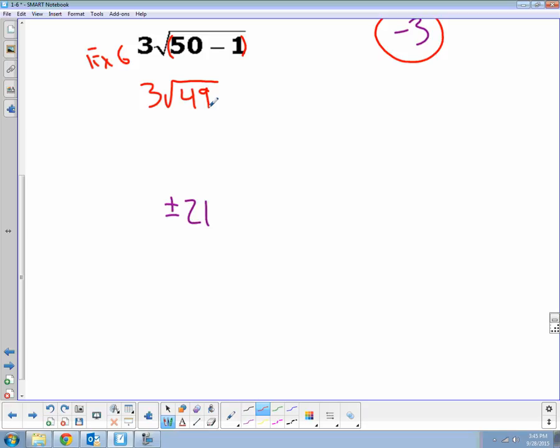Square root of 49, that I can do. It would be three times plus or minus 7. Seven times seven is 49. Negative seven times negative seven is 49.